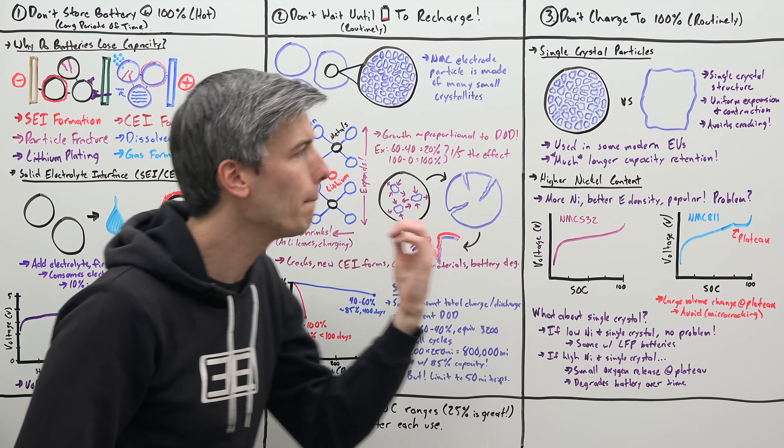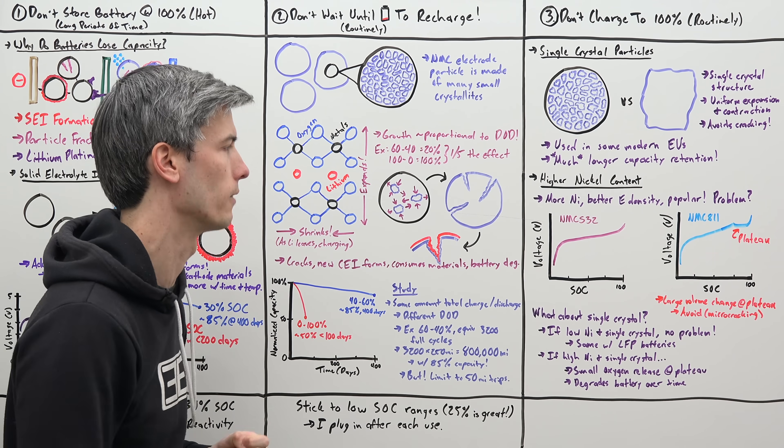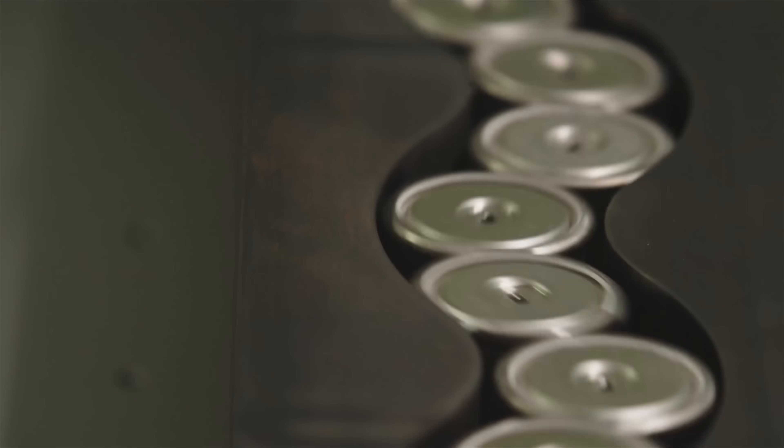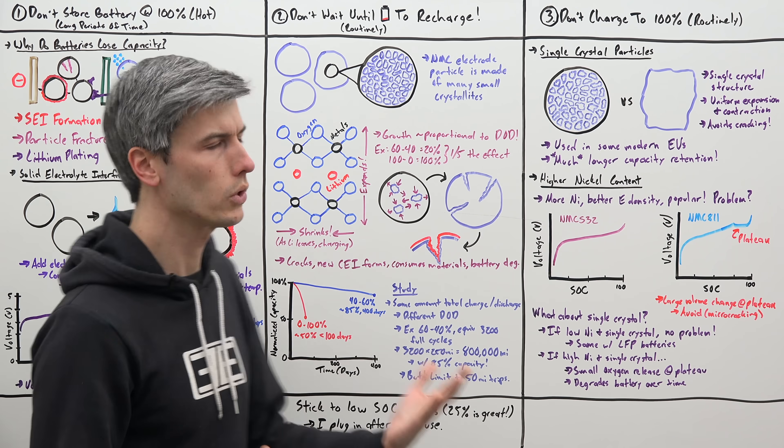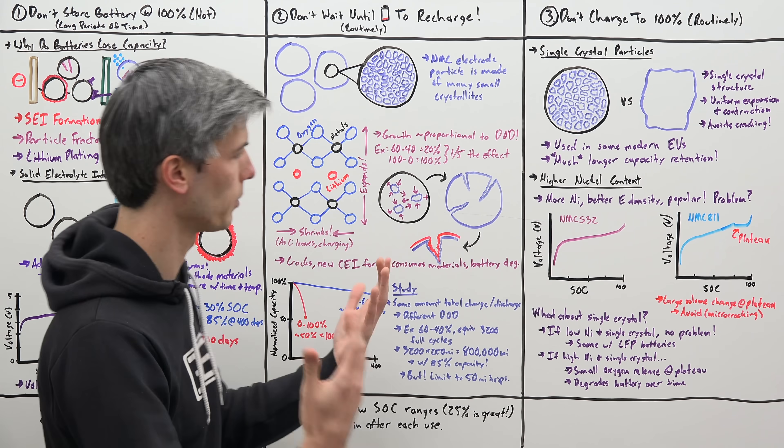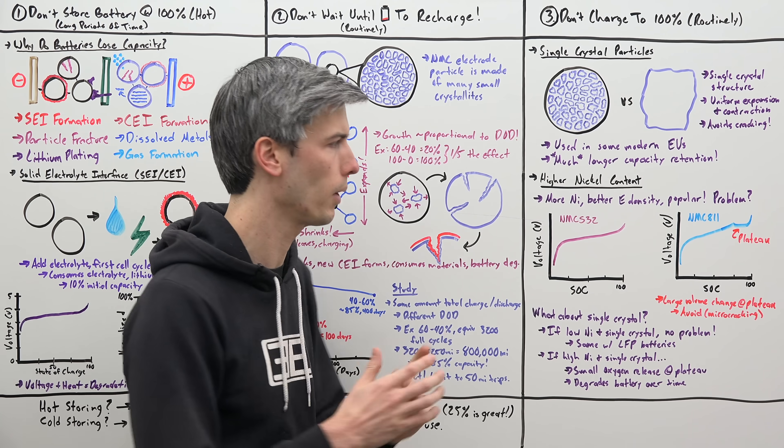Another trend you're tending to see is batteries that are using higher nickel content. Alright, so if you use a battery with more nickel, it has better energy density. Seems like a smart thing to do, so what's the problem?